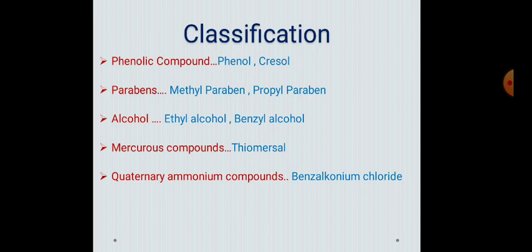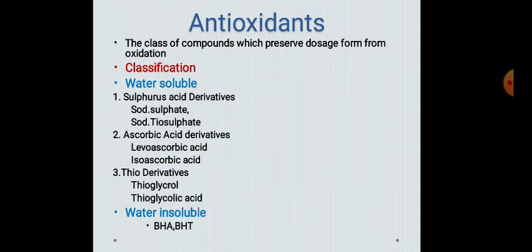Next, antioxidants. Our emulsion contains water and oil. During storage, fats obtained from vegetable or animal sources and emulsifying agents such as wool fat and wool alcohols undergo oxidation by atmospheric oxygen. This can be avoided by using antioxidants. Sometimes oxidation occurs due to enzymes produced by microorganisms; such problems should also be prevented by adding suitable antioxidants. Antioxidants are the class of compounds which preserve the dosage form from oxidation.